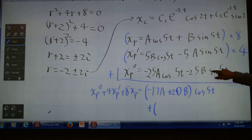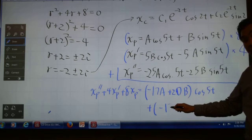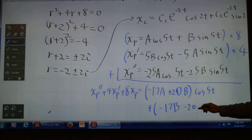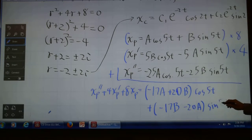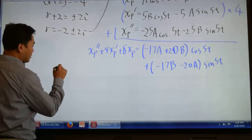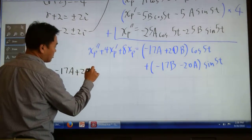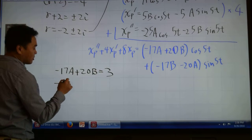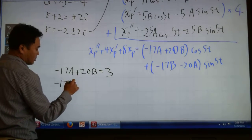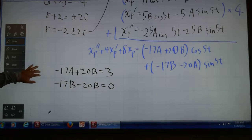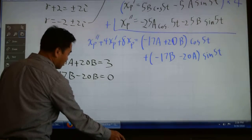Let's also compute the sine side. 8B minus 25B is -17B, and 4 times -5A is -20A. So (-17B - 20A) sin(5t). Therefore -17A + 20B = 3, and -17B - 20A = 0.